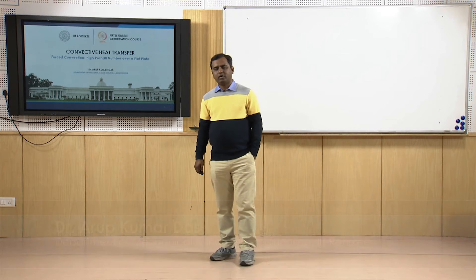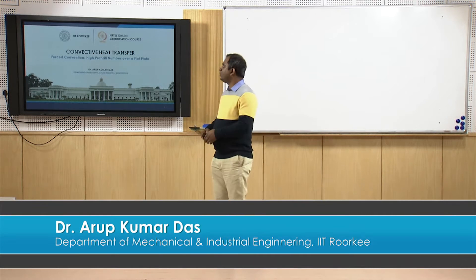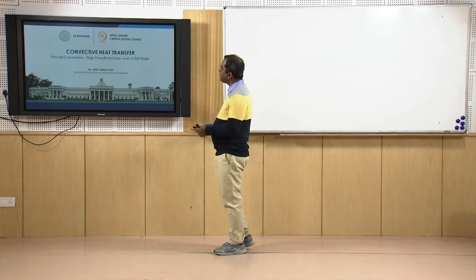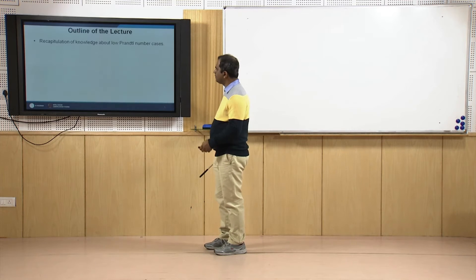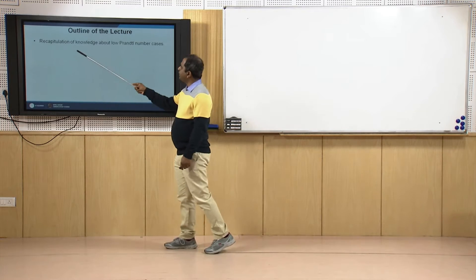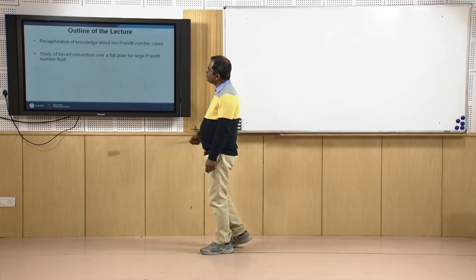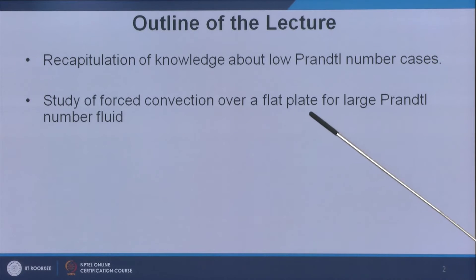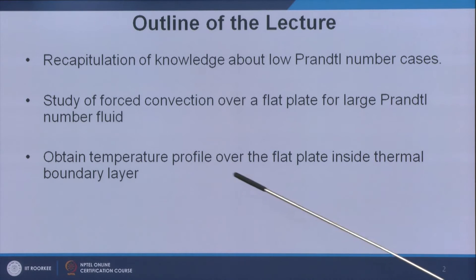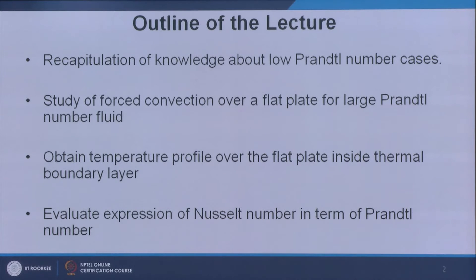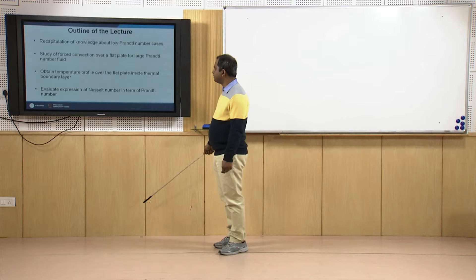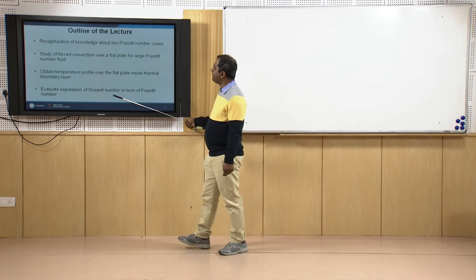Welcome to the sixth lecture of the course on convective heat transfer. In this lecture we will be discussing forced convection at high Prandtl number over a flat plate. First, the outline: we will recapitulate knowledge about low Prandtl number cases from the previous lecture, then study forced convection over a flat plate for large Prandtl number fluids, obtain the temperature profile inside the thermal boundary layer, and express the Nusselt number in terms of Prandtl number.